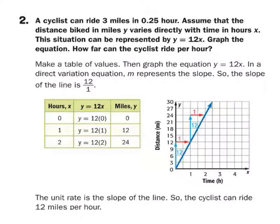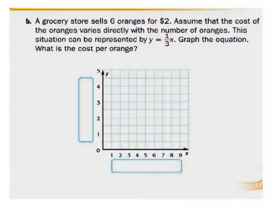This is an example in the book. Graph the equation. You will need to learn, do you guys know how to graph? Notice in B, a grocery store sells 6 oranges for 2 bucks. So, is this a direct variation? Yeah, it is because it told us that it is. It varies directly with the number of oranges. And then it told us the equation as well.